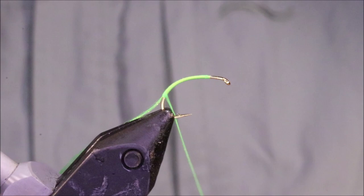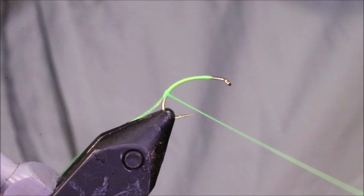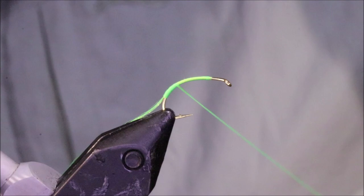So I've got my hook in my vise, this is a size 12 Kamasan B100G, which is probably an all round size for these, 12s and 14s really. And I've run on some Glowbrite number 12.